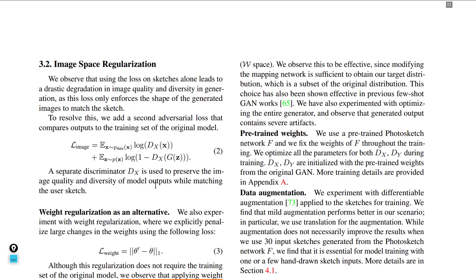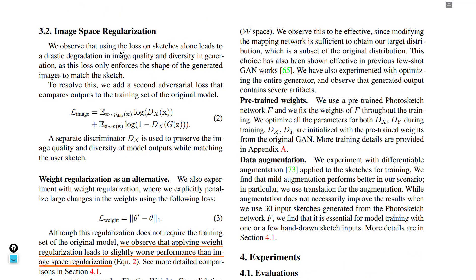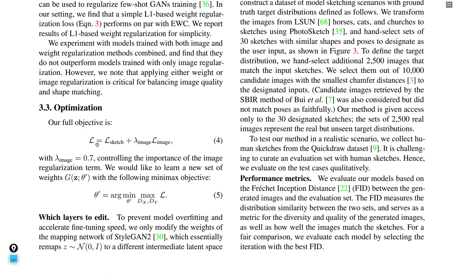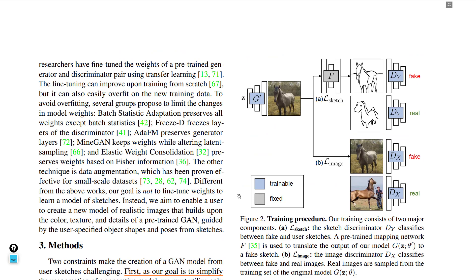L_image is defined accordingly, and the authors also tried weight regularization, which they report to have slightly worse performance compared to image space regularization. The overall objective is L = L_sketch + lambda_image * L_image, using lambda_image = 0.7 to control the importance of the image regularization term. To prevent overfitting and accelerate fine-tuning, they modify only the weights of the mapping network of StyleGAN2, as modifying this mapping network is sufficient to obtain the target distribution, which is a subset of the original distribution.